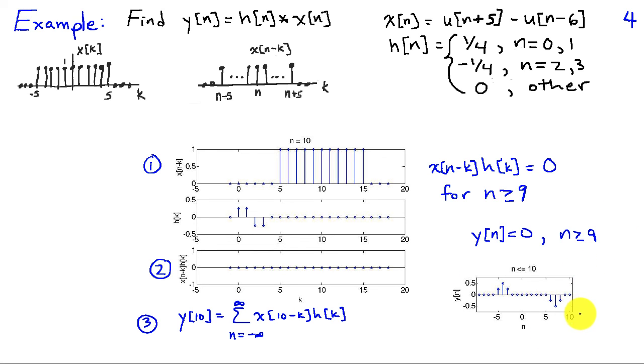My result, I've only shown the values between minus 9 and 10 here. But you can see that we had some activity occurring when the leading edge passed through this non-zero portion of h of k. We get some more activity occurring when the trailing edge passed through the non-zero portion of h of k.